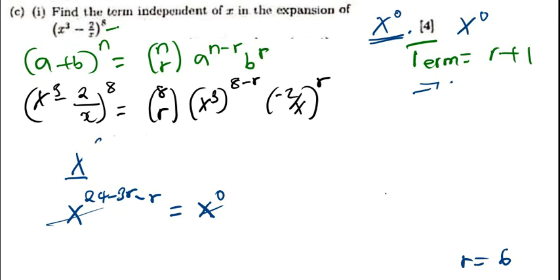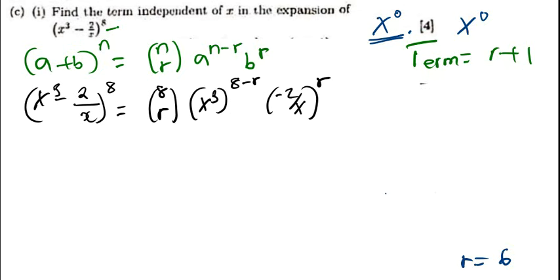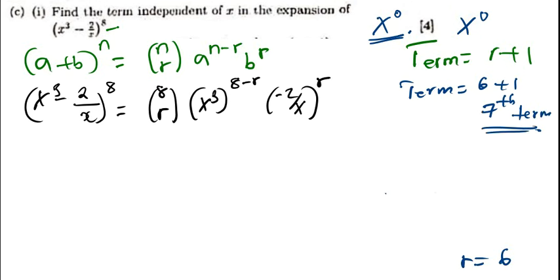So my r value is 6. Now what term is independent of x? The term is given by r is 6 plus 1. So it's actually the 7th term. The 7th term is the term that doesn't have x.